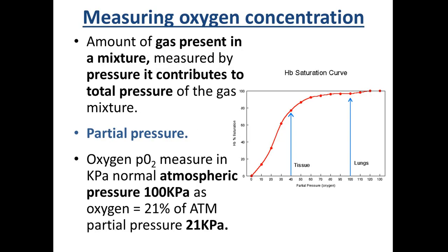A little note about what partial pressure means: the partial pressure is the amount of gas present in a mixture, measured by the pressure it contributes to the total pressure of the gas mixture. For example, normal atmospheric pressure is 100 kilopascals, and 21% of the atmosphere is made up of oxygen. Therefore, oxygen exerts 21% of the total pressure — 21% of 100 kilopascals is 21 kilopascals. So in all atmospheric conditions, oxygen has a partial pressure of 21 kilopascals.